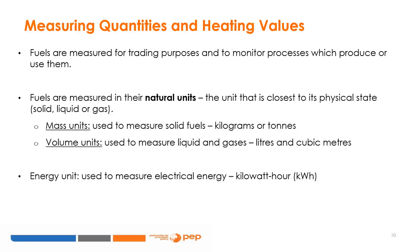In energy economics, it is important to understand the different units of measurement for different fuels and energy sources. Fuels are measured for trading purposes and to monitor processes which produce or use them. The units employed at the point of measurement are those best suited to the physical state — solid, liquid, or gas — and require the simplest measuring instruments. These are termed the natural units or physical units for the fuel. Typical examples are mass units for solid fuels (kilograms or tons) and volume units for liquids and gases (liters or cubic meters). Electrical energy is measured in kilowatt hours (kWh).